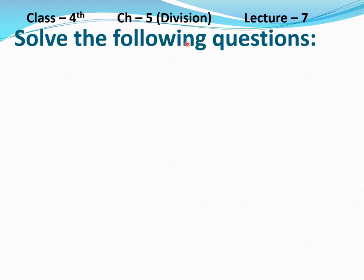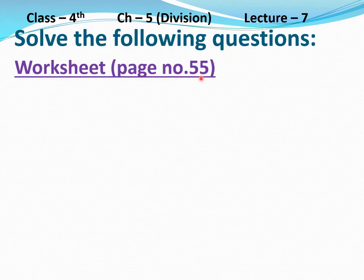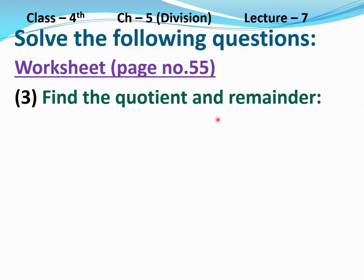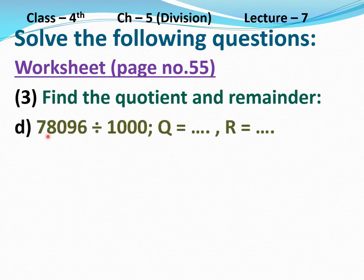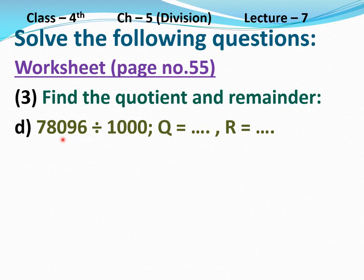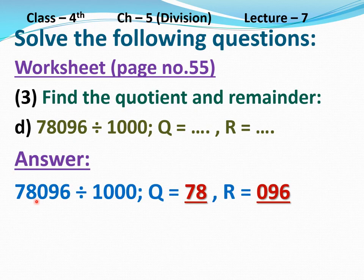Solve the following questions. Worksheet given on page number 55, question number 3: Find the quotient and remainder. Part D: 78,096 divided by 1000. Quotient equals dash, remainder equals dash. Divisor is 1000, so the last three digits of the dividend — 0, 9, and 6 — form 096, which will be the remainder. The remaining digits, 7 and 8, form 78, which will be the quotient. Answer: 78,096 divided by 1000 — quotient equals 78, remainder equals 96. Clear?